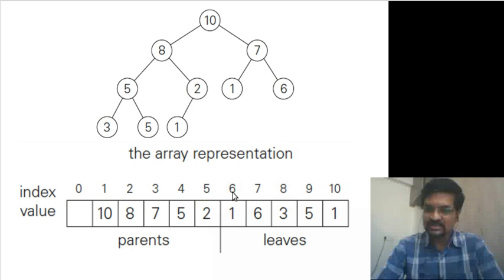So it also says that children of six were supposed to be at twelve and thirteen and we don't have those indices in our array which means that this is a leaf. It doesn't have children. So these five are leaves and these five are non-leaf nodes.